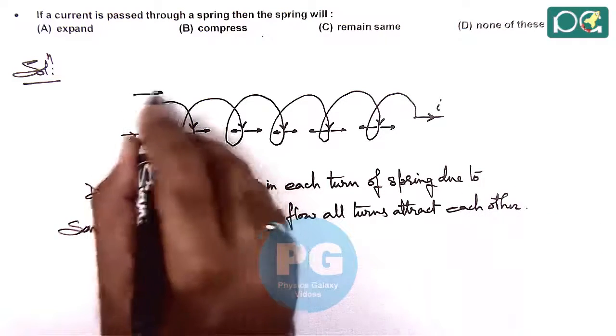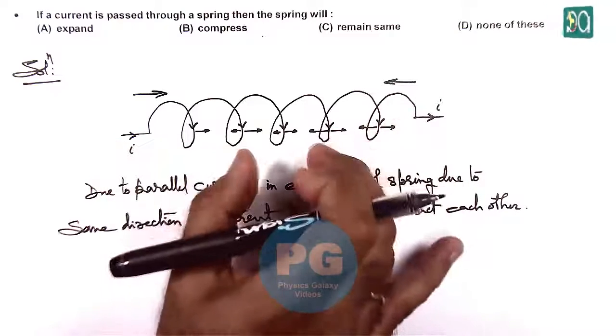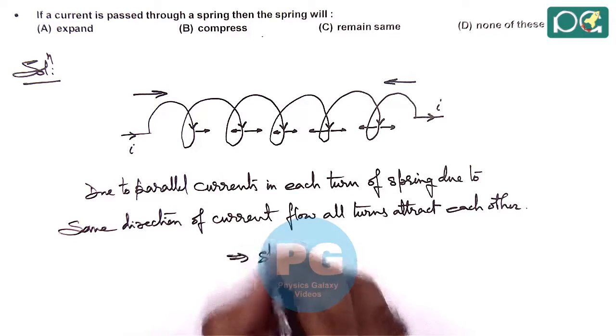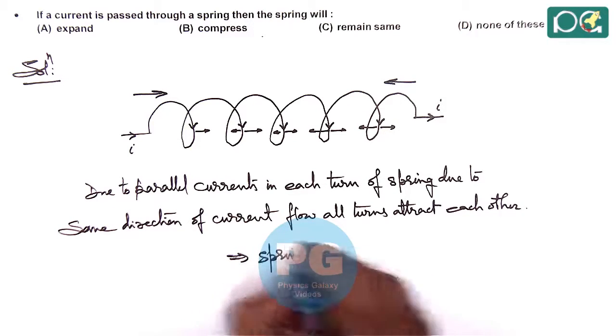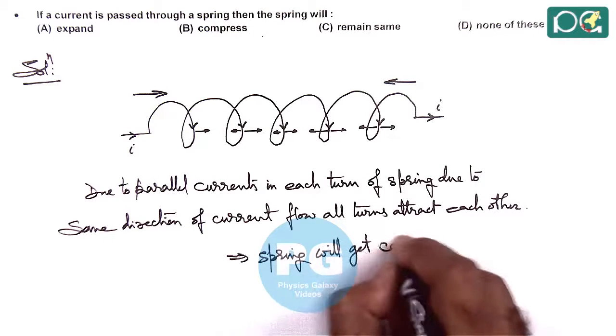And if all turns are attracting each other, overall the spring turns will be having an attractive force, and the spring will get compressed. This implies spring will get compressed.